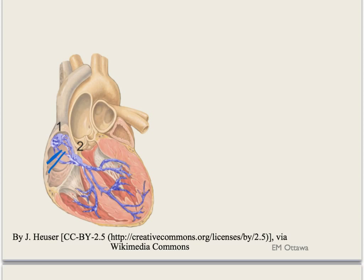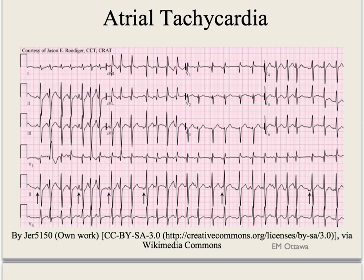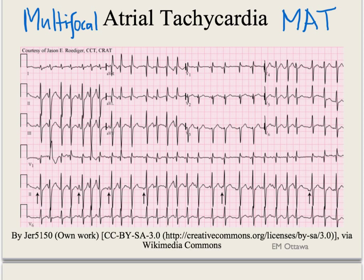Moving on to the atrium itself — this is atrial tachycardia. The QRS is irregular and narrow. This is also known as multifocal atrial tachycardia, or MAT. What happens here is that there are different pacemaking foci in the atrium that contribute to different-looking P waves. If you look at lead 2, the arrows are showing there are at least 3 to 4 different-looking P waves, since each different P wave is coming from a different focus in the atrium. Since there are different foci, the QRS is not exactly regular.